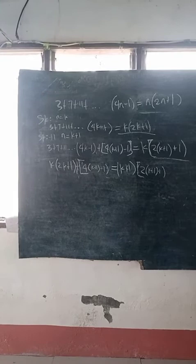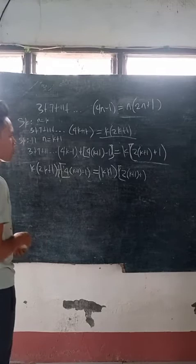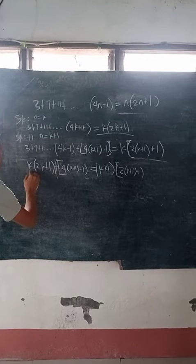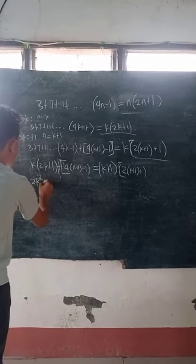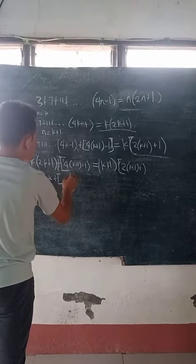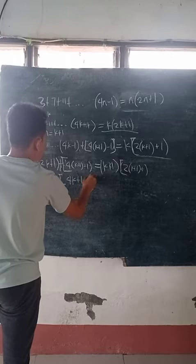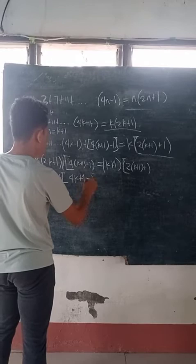So we will distribute using the FOIL method. So k times 2k is 2k squared, plus k, and then plus 4 times k plus 1, minus 1. We expand: 4 times k is 4k, and 4 times 1 is 4.